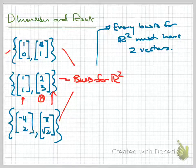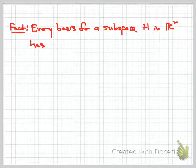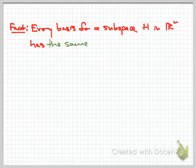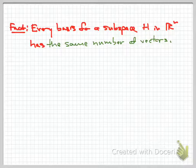We can extend this to a larger result stated as a theorem: every basis for any subspace H, whether it's all of Rn or not, has the same number of elements. Any basis for a subspace H in Rn has the same number of vectors. So if you find one basis with six elements, any other basis for H will also have six elements—they may not be the same six, but there will always be six of them.